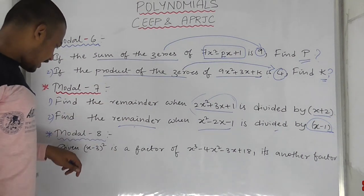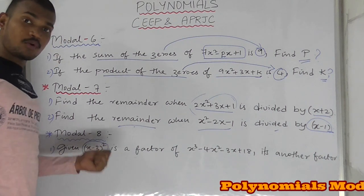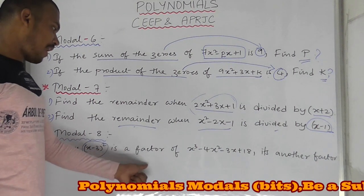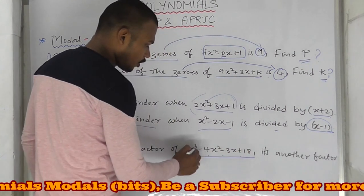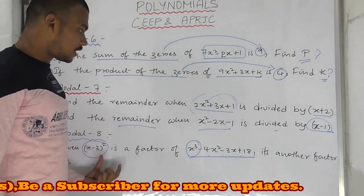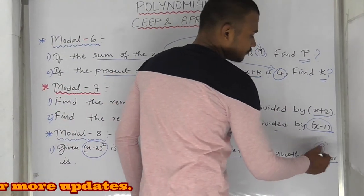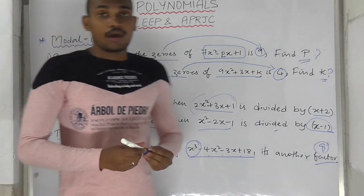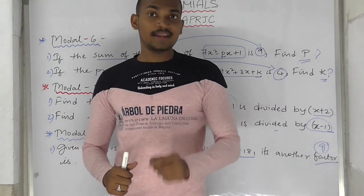Model number 8: given that x minus 3 is a factor of x cubed minus 4x squared minus 3x plus 8. This is a cubic polynomial — it has 3 roots. Two roots are given, find the other root. Similarly, for a quadratic polynomial with one root given, find the other root. This is model number 8.